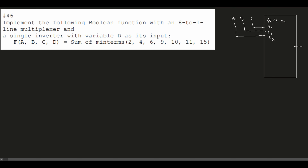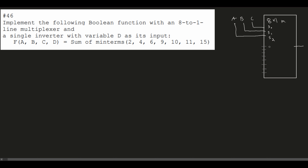We have our 8-to-1, so here's the one output and now we need the 8 data inputs. They're going to be labeled D0, D1, D2, D3, D4, D5, D6, and lastly D7.